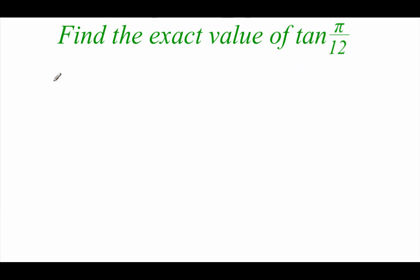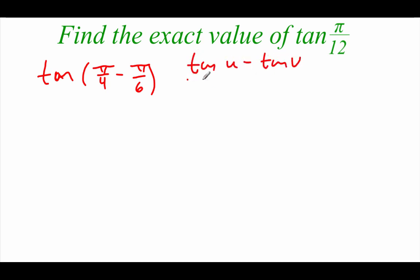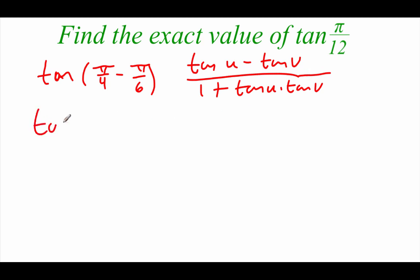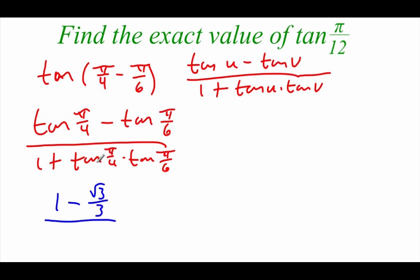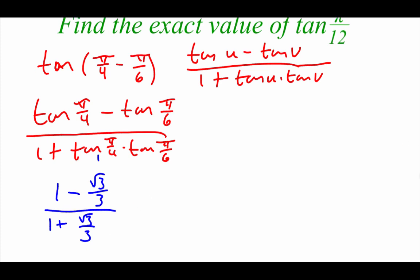In this example, we're looking at the tangent of pi over 12. We did sine and cosine of pi over 12 in the last video. We broke it down as pi over 4 minus pi over 6. Looking at our tangent difference formula — tangent of U minus tangent of V all over 1 plus tangent of U times tangent of V — we plug in: tangent of pi over 4 minus tangent of pi over 6 on top, and 1 plus tangent of pi over 4 times tangent of pi over 6 on bottom. Tangent of pi over 4 is 1 and tangent of pi over 6 is root 3 over 3, giving us 1 minus root 3 over 3 on top and 1 plus root 3 over 3 on bottom.